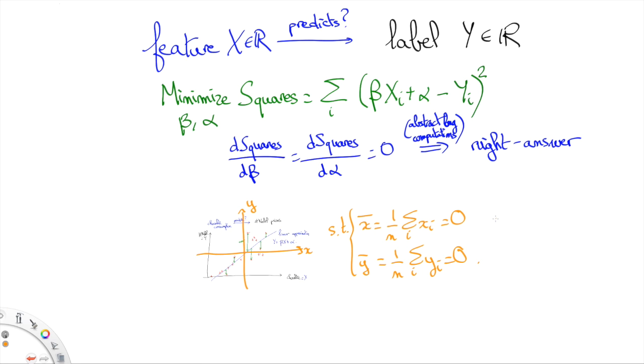It's intuitively clear, at least, that the best linear approximation will have to go through the origin of this new coordinate system, plus it will have the same slope as the best linear approximation described in the old coordinate system.